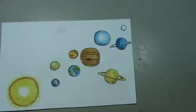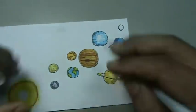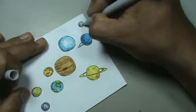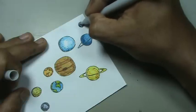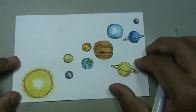Y finalizamos con Plutón. Vamos a aplicarle un poquito de gris y algo de sombra. Ahí tenemos entonces los planetas del sistema solar.